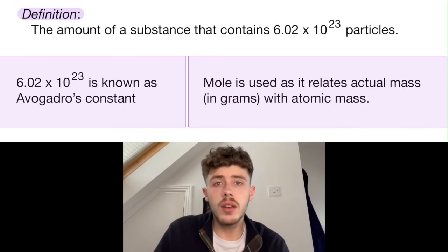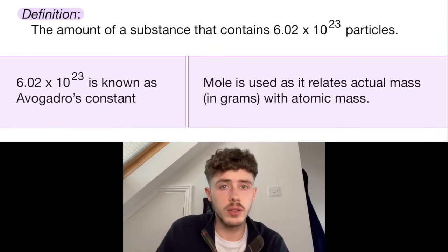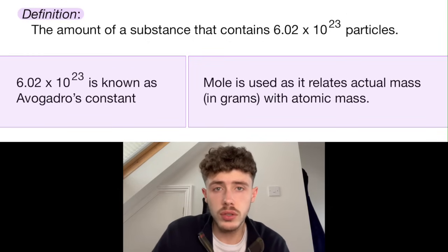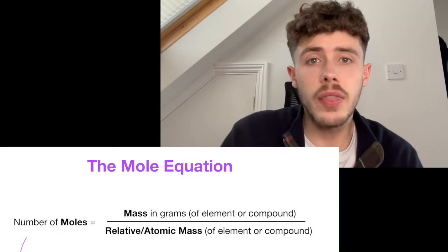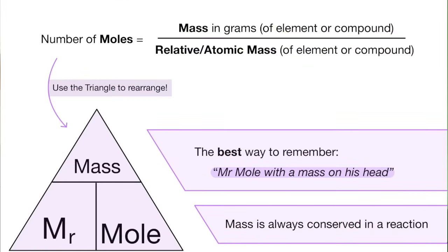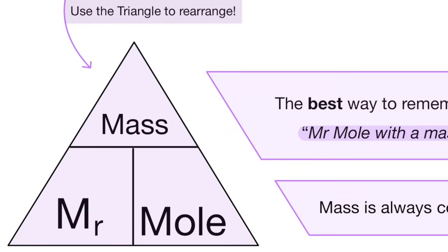Moles. Moles are used as a kind of standard unit in chemistry. In one mole of any substance, there are 6.02 × 10²³ atoms — this is known as Avogadro's constant. At GCSE, moles are used in a formula alongside the relative atomic mass and the mass of a substance. A good way to remember this equation is 'Mr. Moles with a mass on his head', and that is how it looks in the equation triangle.